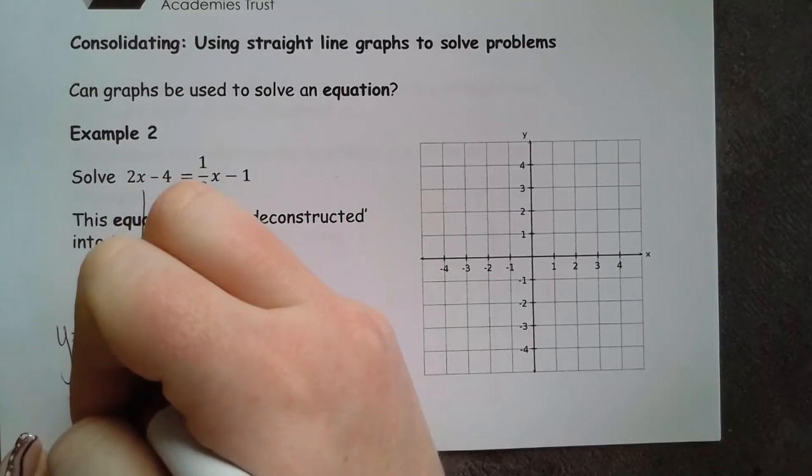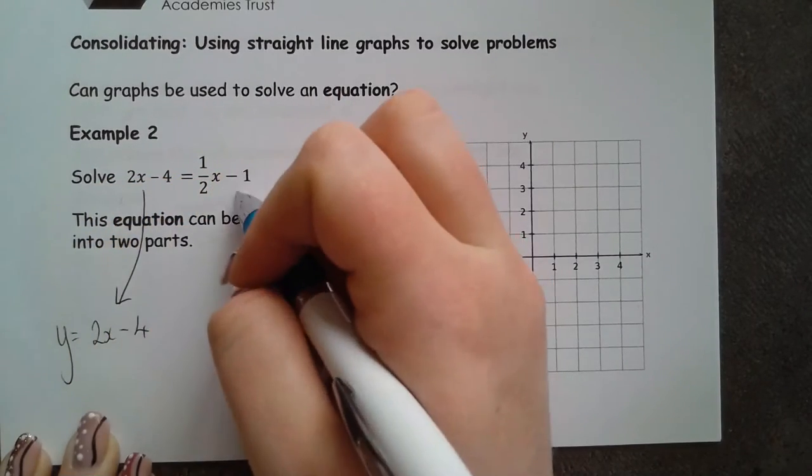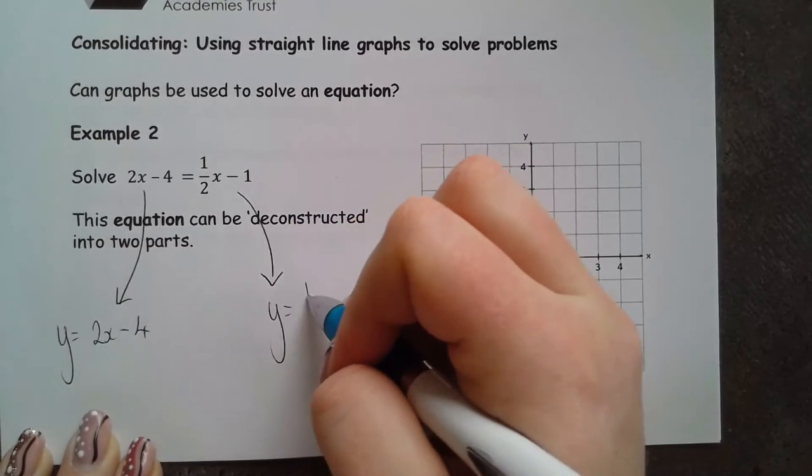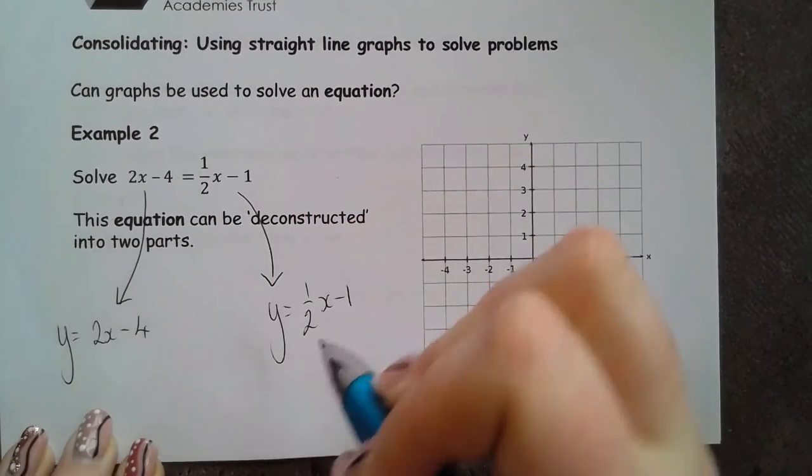So I've got y equals 2x minus 4, and I've got y equals one half x minus 1.